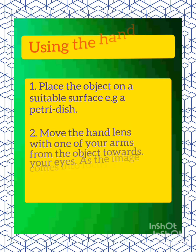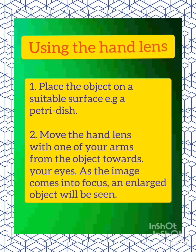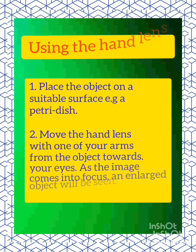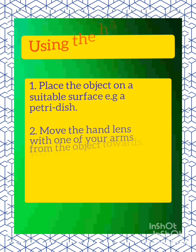Using the hand lens, place the object on a suitable surface. Move the hand lens with one of your arms from the object towards the eyes. As the image comes into focus, an enlarged object will be seen.